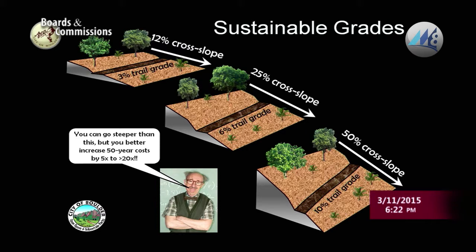Does this mean we do all of our trails at OSMP that way? No — some need to be steeper for other reasons within those five criteria. We might need to go steeper to avoid a sensitive resource, or user groups might want a steeper trail to climb the peaks in Boulder's mountain backdrop. We have to go steep sometimes, but that increases our 50-year life cycle costs — it could be five times, or up to 20 or more times.